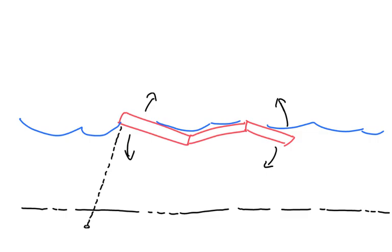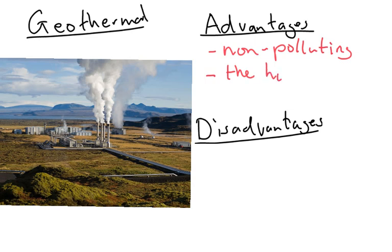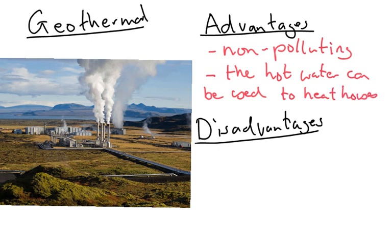Next we're talking about geothermal power. The advantages of geothermal: again, it is non-polluting, and the hot water produced can be used to heat people's houses. But the disadvantage of geothermal as a power resource is you can't use them everywhere.